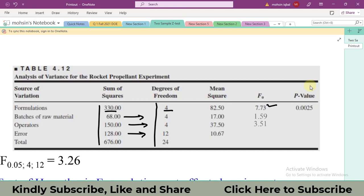Then we have calculated three F0 values for the formulation or treatment: 1.59 for our first nuisance factor, 3.51 for the second nuisance factor. This p-value has been calculated by this is the output of the Minitab software. However, you can calculate it in Excel by using the command.